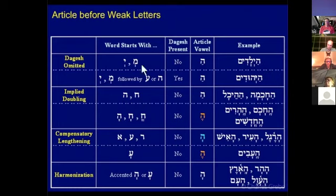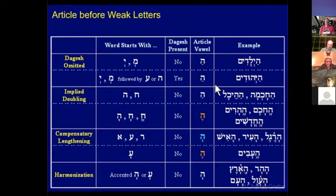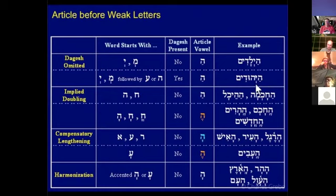There is an exception: if the Yud or the Maim are followed by two of the gutturals — the Ayin and the He — then the dagesh will stay. So Hayiladim becomes Hayladim without dagesh, but Yehudim — Jews — keeps the dagesh, because this Yud is followed by He. So dagesh is omitted with two coalmine letters, except when they are followed by Ayin or He.